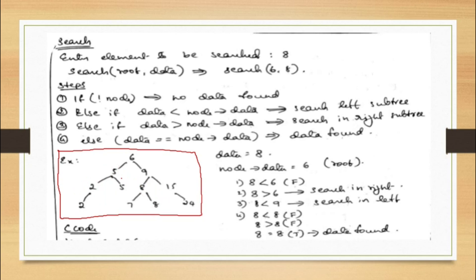Today I am taking the data 8 — I need to search for 8. Our operation starts from the root node, because we go through elements according to our condition. All elements doesn't mean you go through every element in the tree — you start from the root according to the condition. Here, 6 is the root and 8 is the data which we have to search.